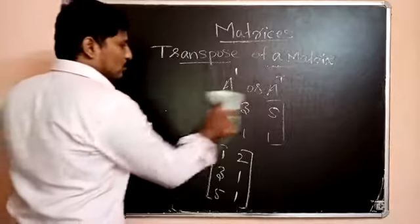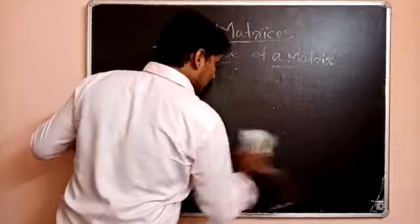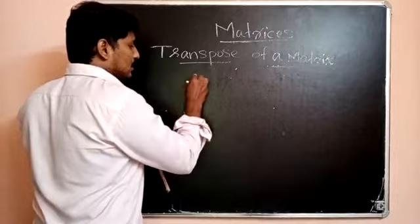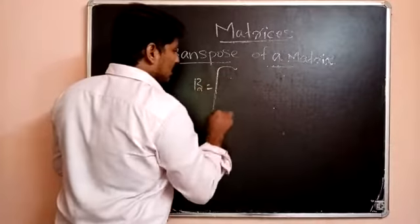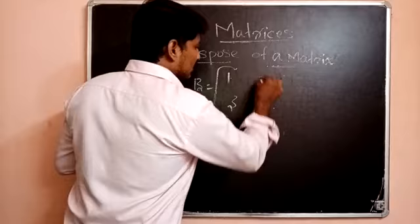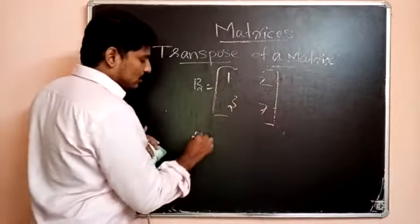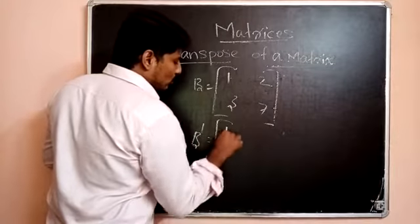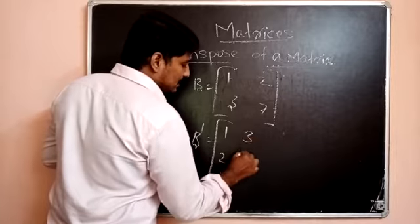Another example: If B is equal to the matrix 1, 2, 3, 7 — find B transpose. B transpose is equal to: we write 1, 2, 3, 7 and interchange the rows and columns.